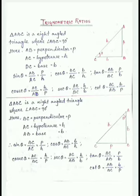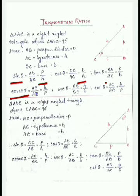So we remember: sin is P by H, cos is B by H, tan is P by B. The reciprocals are: cosec is sin inverse, meaning H by P; sec is cos inverse, meaning H by B; and cot is tan inverse, meaning B by P.